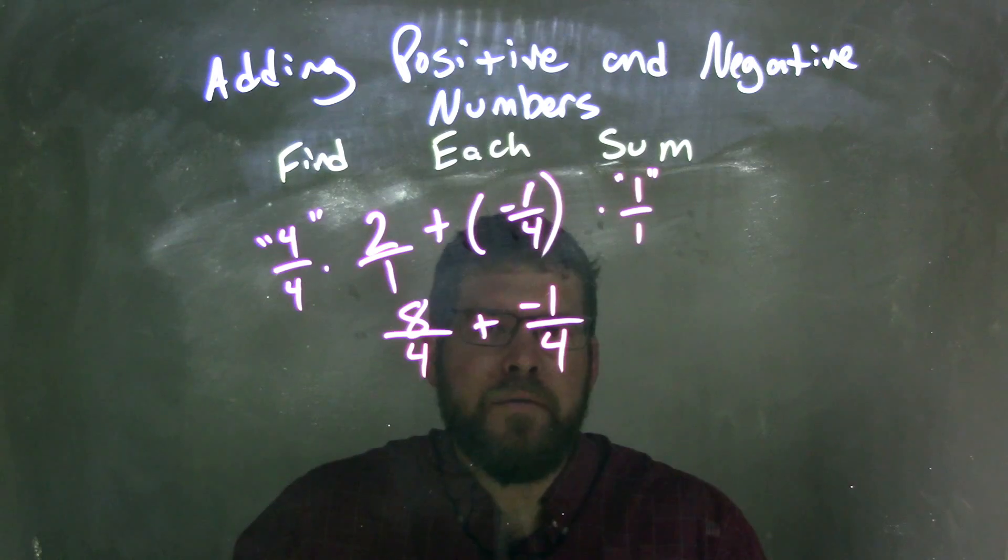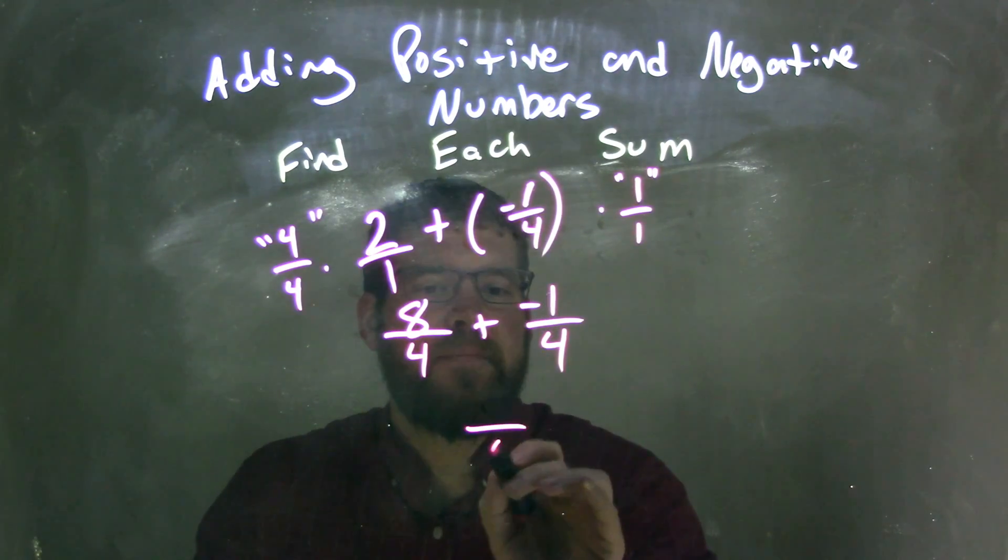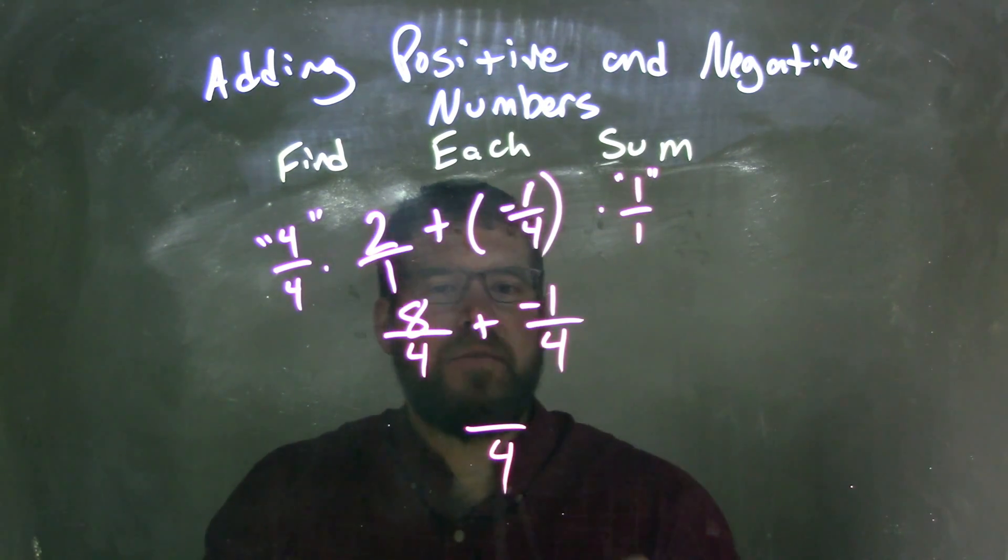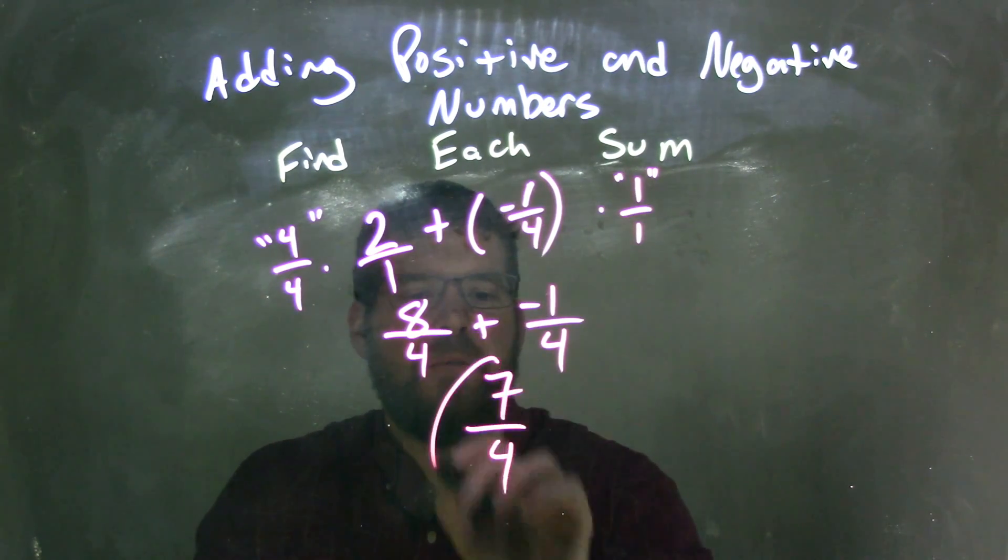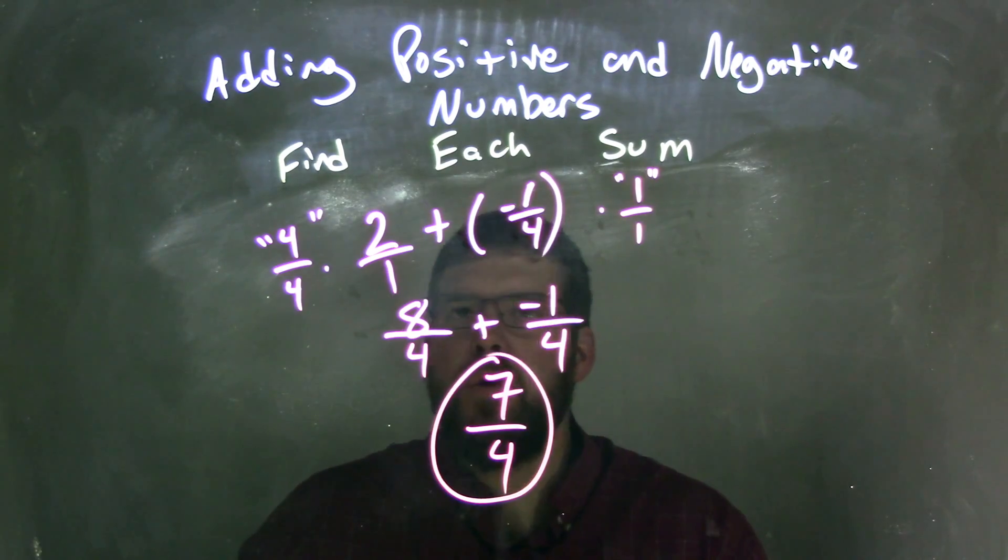So we have 8 fourths plus a negative 1 fourth. Well, the base is just the same. And now we have 8 plus a negative 1, which is 8 minus 1, which is 7. And so my final answer is just 7 fourths.